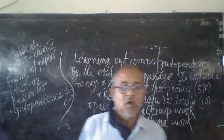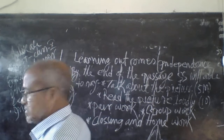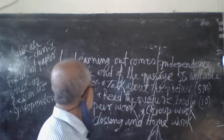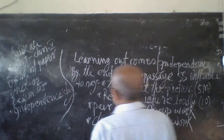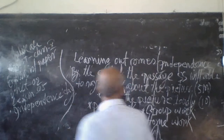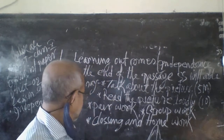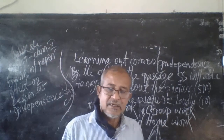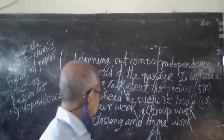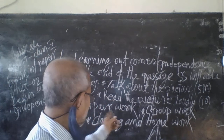You need unit two, lesson five. Learning outcomes: by the end of the lesson, students will be able to read the picture and talk about the picture.